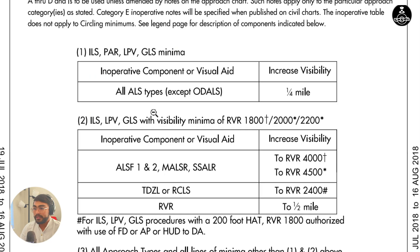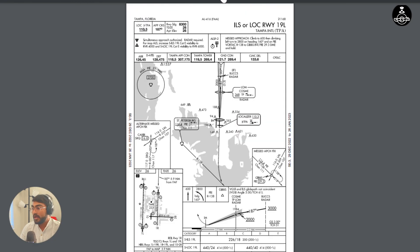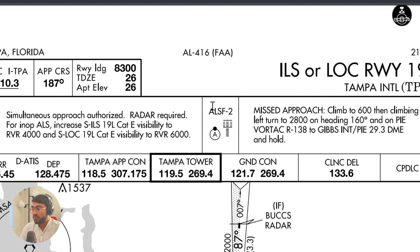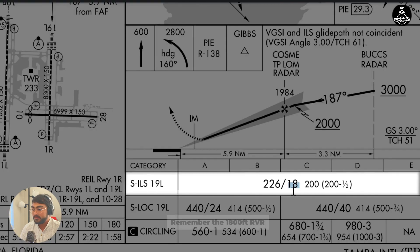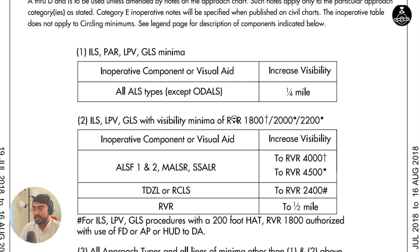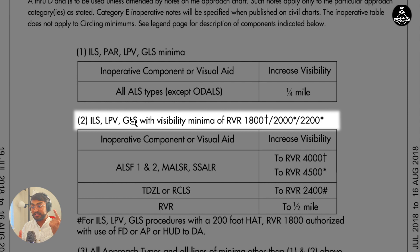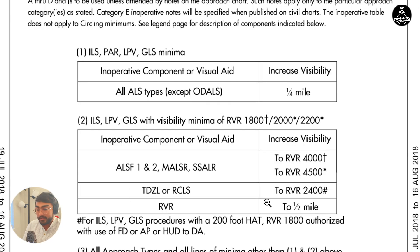Now let's look at the second table. Table 2 is for ILS, LPV, and GLS with visibility minima of RVR 1800, 2000, or 2200. Let's take a look at Tampa ILS localizer runway 19L. It has ALSF2 as the approach light system, and the minimums show 1800 feet RVR as the minimum visibility required — that's why we use table 2 and not table 1. Although both are for ILS, table 2 specifically applies to approaches with RVR 1800, 2000, or 2200. Since ours is 1800, this is the table that applies. ALSF2 is inoperative.